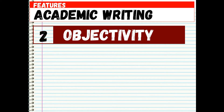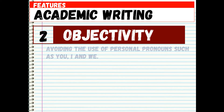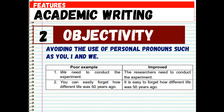Two: objectivity. Objectivity means that the writing must be impersonal. The main emphasis should be on the presented information and arguments rather than what you personally think about the issue. It is achieved through avoiding personal pronouns such as 'you,' 'I,' and 'we.' Instead of writing 'We need to conduct the experiment,' write 'The researchers need to conduct the experiment.' Instead of 'You can easily forget how different life was 50 years ago,' write 'It is easy to forget how different life was 50 years ago.'